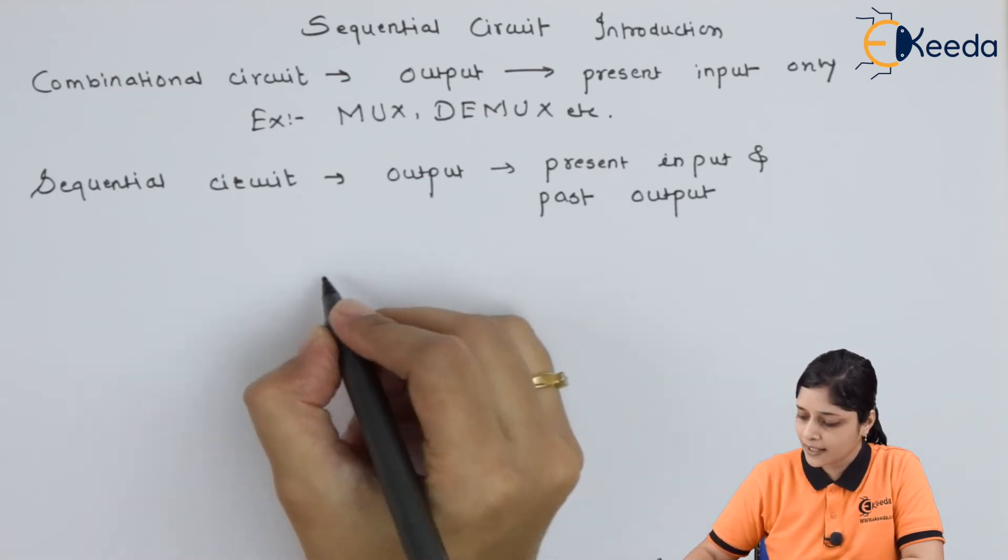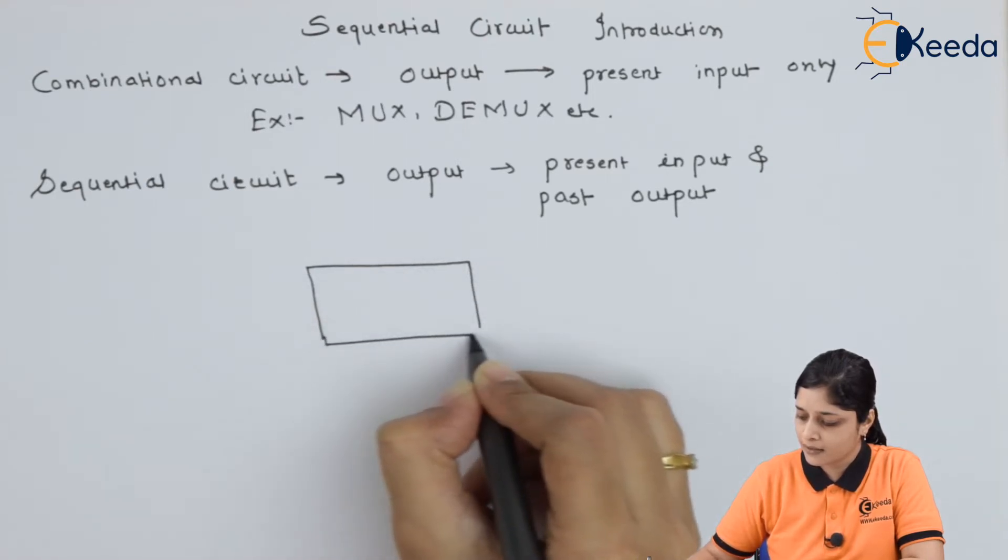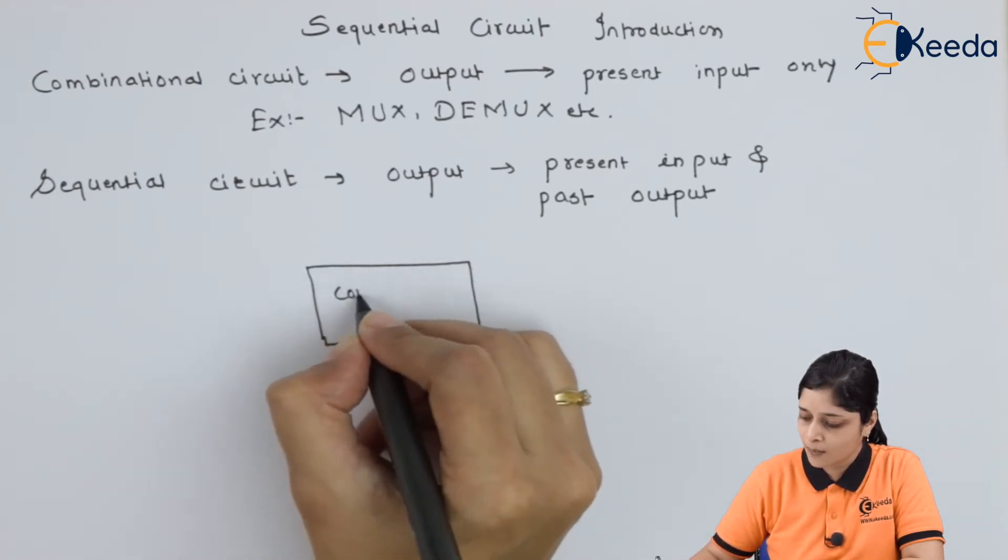If you draw the diagram for sequential circuit, then it is a combinational circuit.